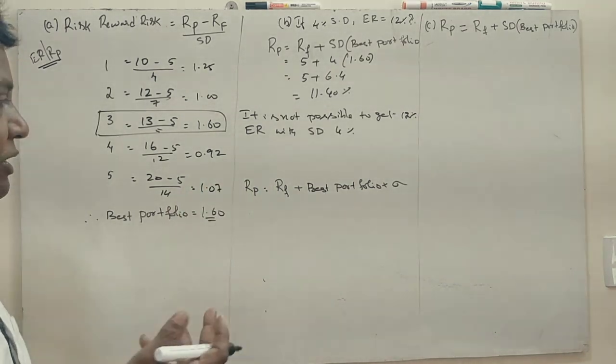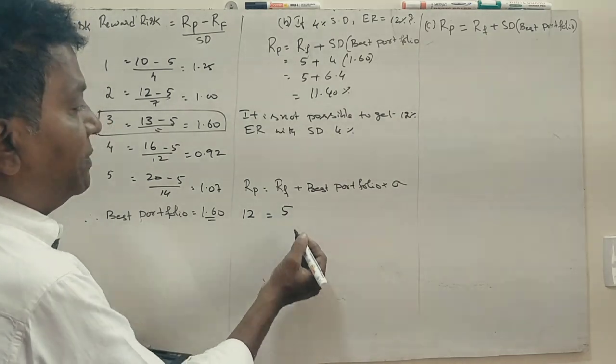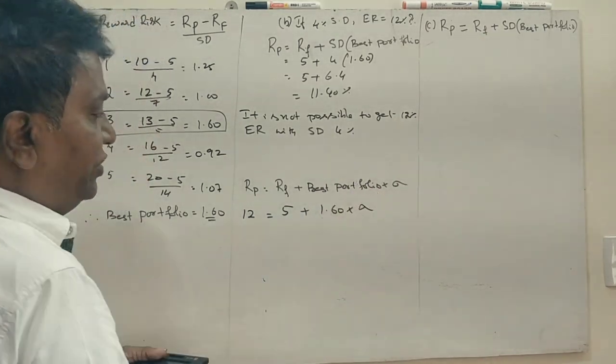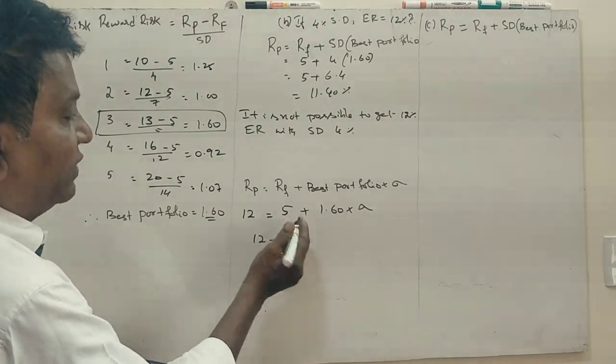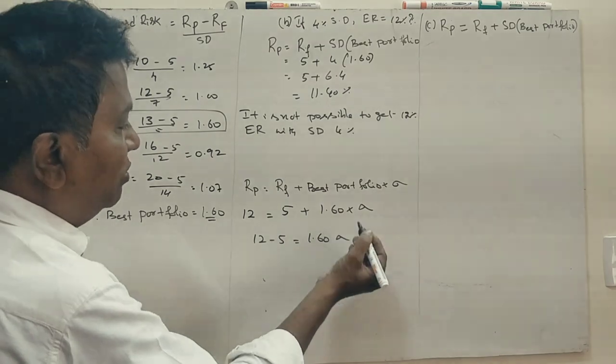So 12 minus 5. Standard deviation... So 12% with 5% risk-free, best portfolio 1.6, standard deviation we don't know. So 12 minus 5, 1.60 into standard deviation.